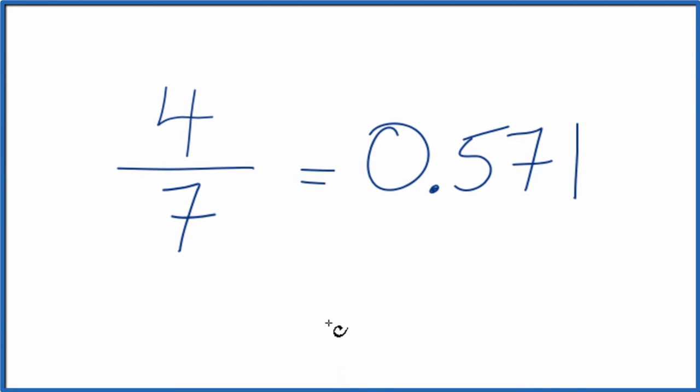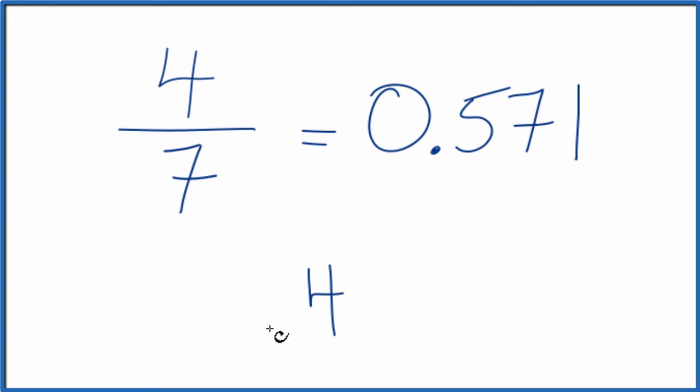We could also say that we have 4, and we're dividing it by 7. So we want to know how many times 7 goes into 4. So 7 doesn't go into 4. So we could say 0 and put a point here, and then we could call this 40.